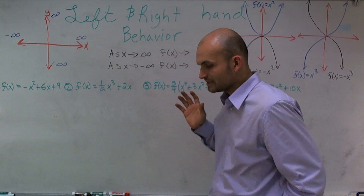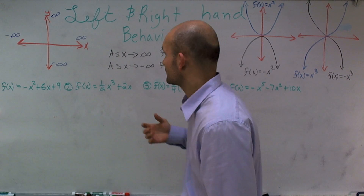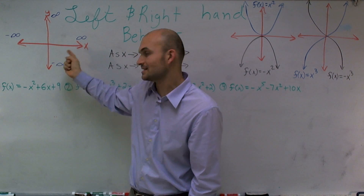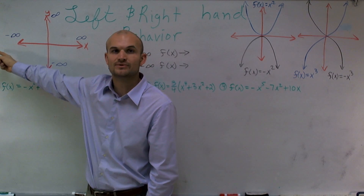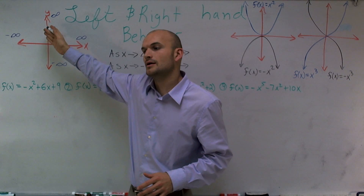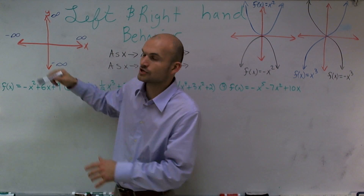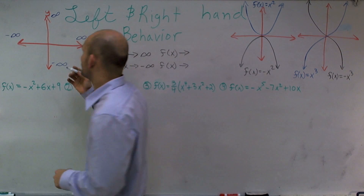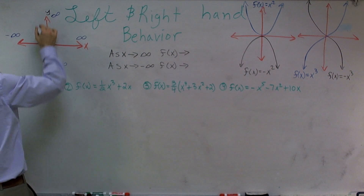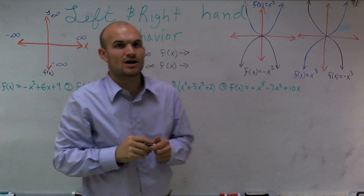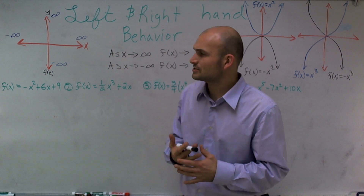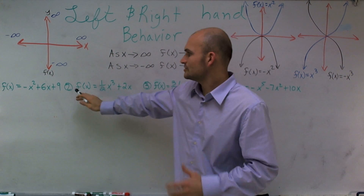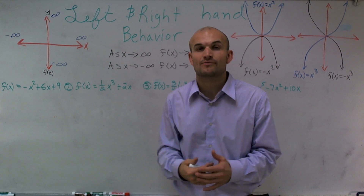A couple of things we need to know about our Cartesian coordinate system. If we have an x and y plane, our x-axis goes all the way to infinity and also continues all the way to negative infinity. Our y-axis goes all the way up to infinity and all the way down to negative infinity. Since we've started talking about functions, we replace our y with f of x, because we use f of x as our output value. This is going to help us write our end behavior a little bit better.